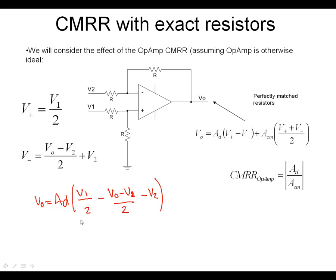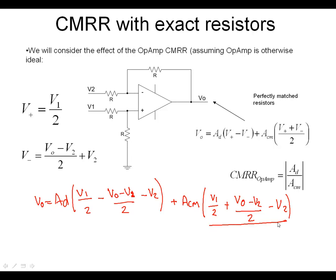That's only the differential mode signal, so now we need the common mode signal. So ACM — the common mode signal here is effectively the addition of the two divided by 2. So we write V1 over 2, plus Vout minus V2 over 2, minus V2, and that's all divided by 2, because it's the average of the two, in effect.